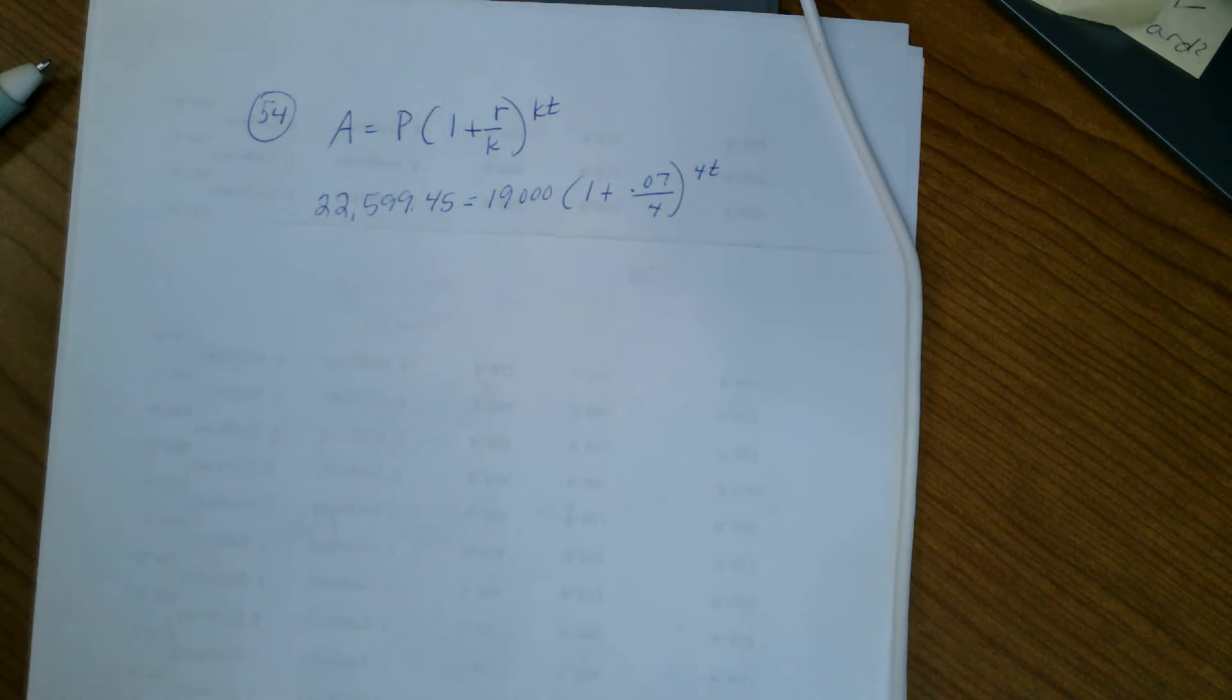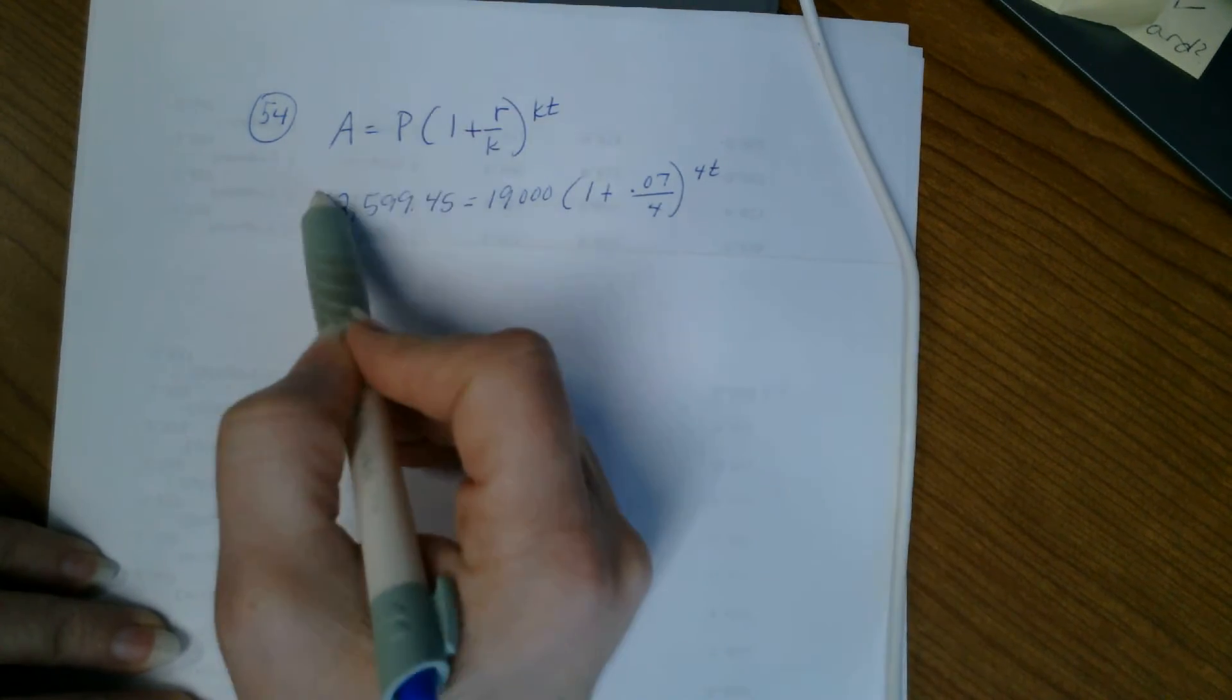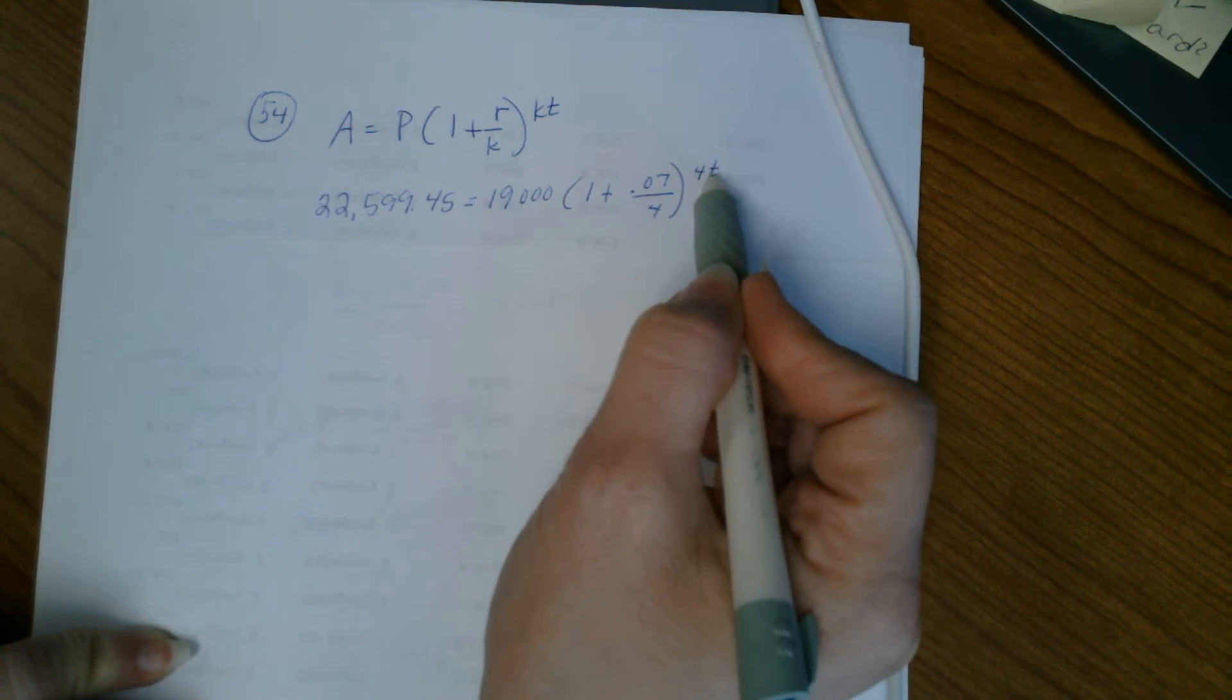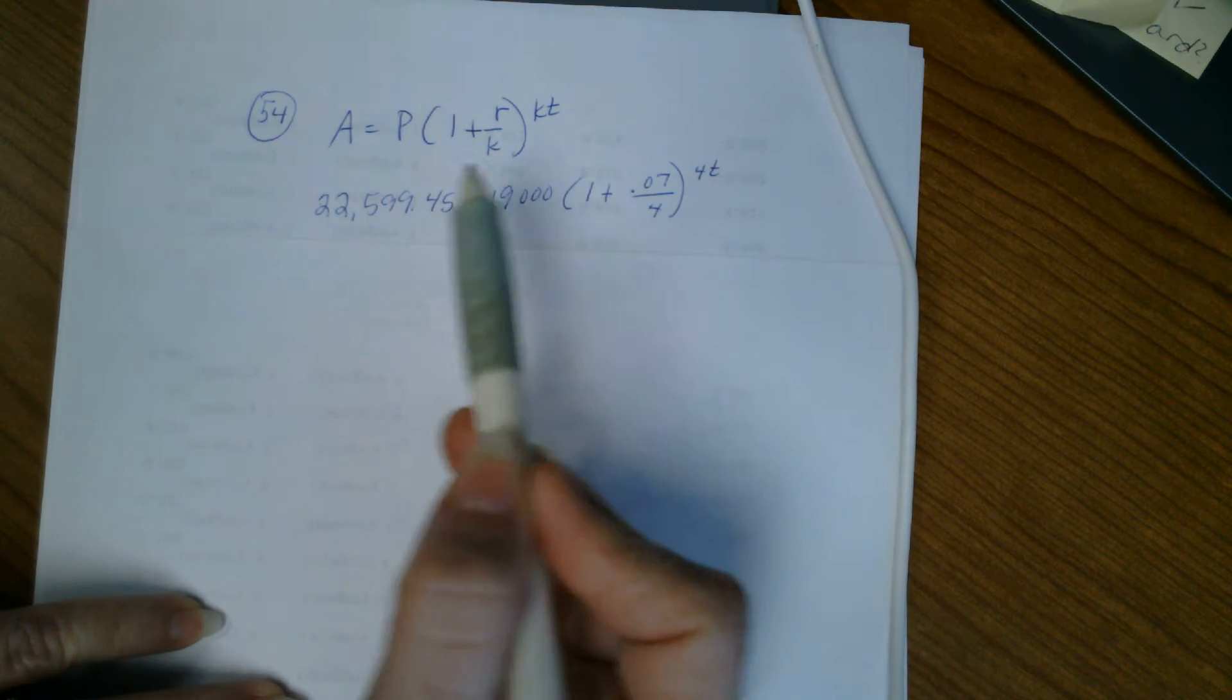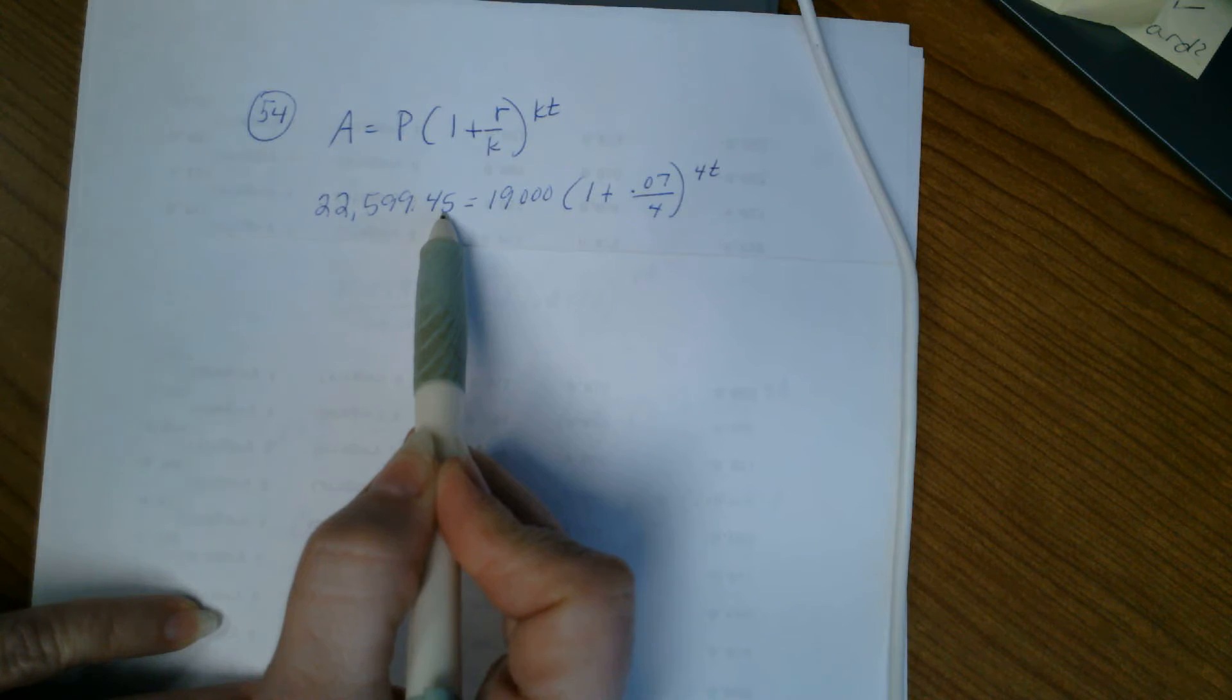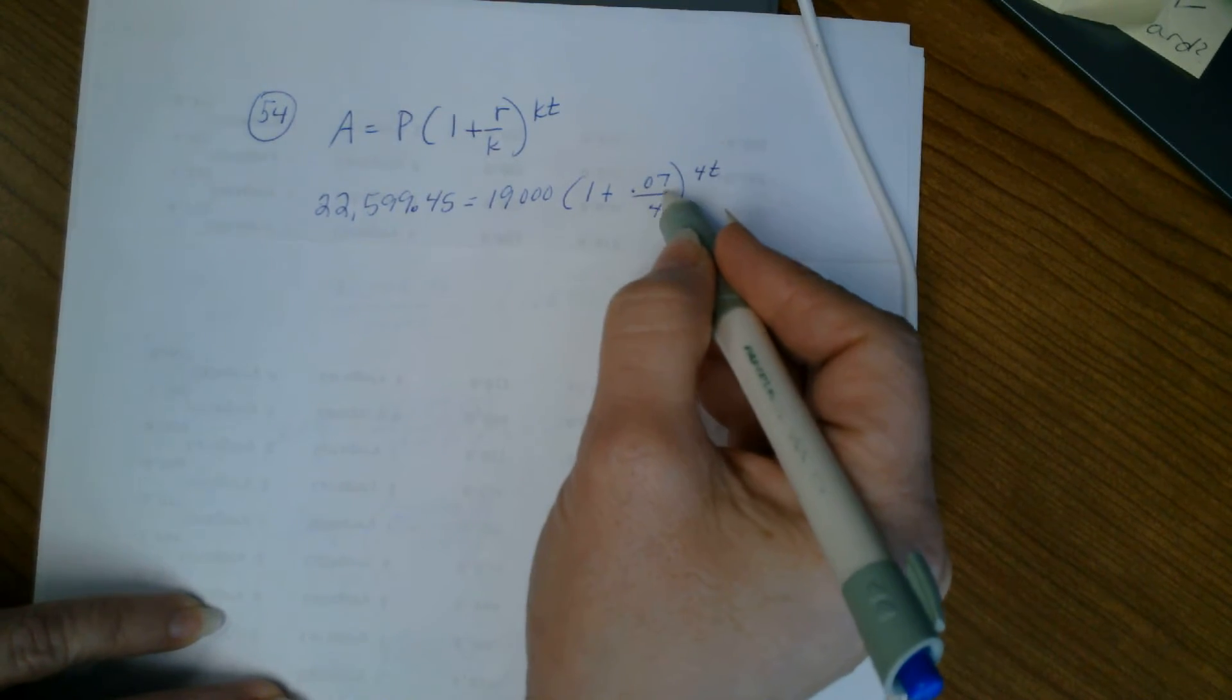All right, so we're looking at question number 54 on the study guide. We're using the compound interest formula. It asks us to find the time t, that's the only part not given in the problem. They tell us that we're investing, for example, $19,000 and we want to grow to $22,599.45 to be specific, and it's compounded at seven percent.